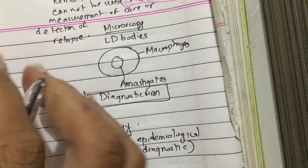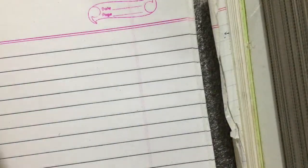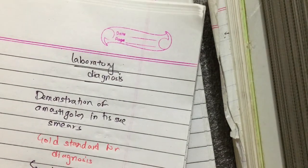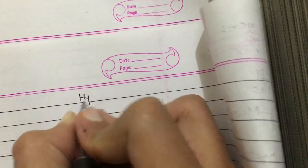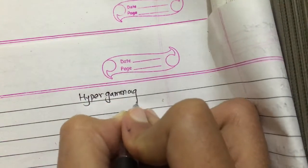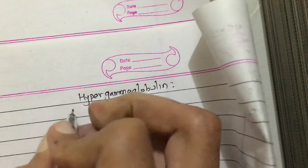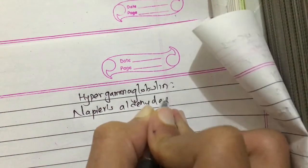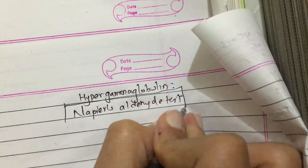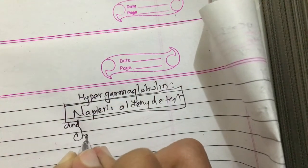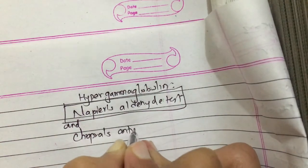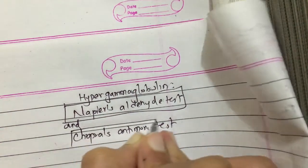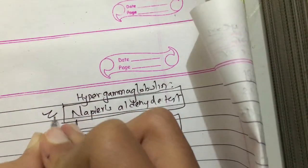Furthermore, hypergammaglobulinemia — that is the increase in the level of gamma globulin — is detected by the aldehyde test of Napier, also called the Napier aldehyde test, and Chopra's antimony test. We will discuss the Napier aldehyde test in the next video.